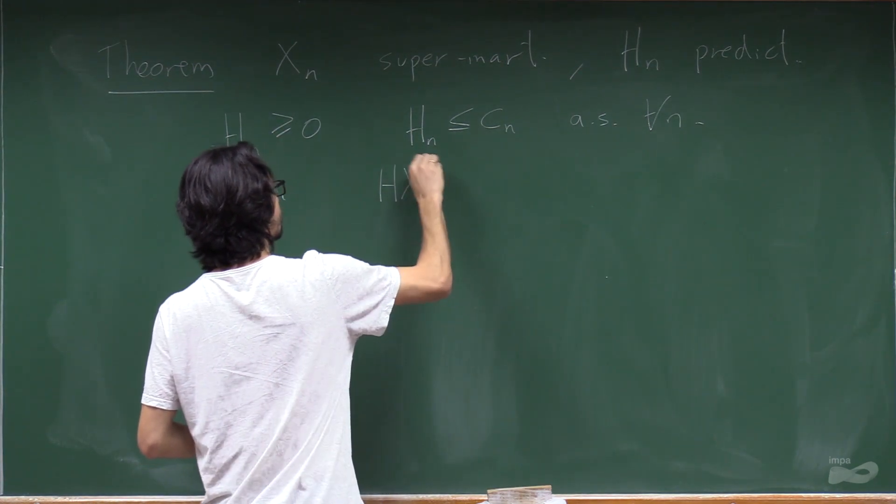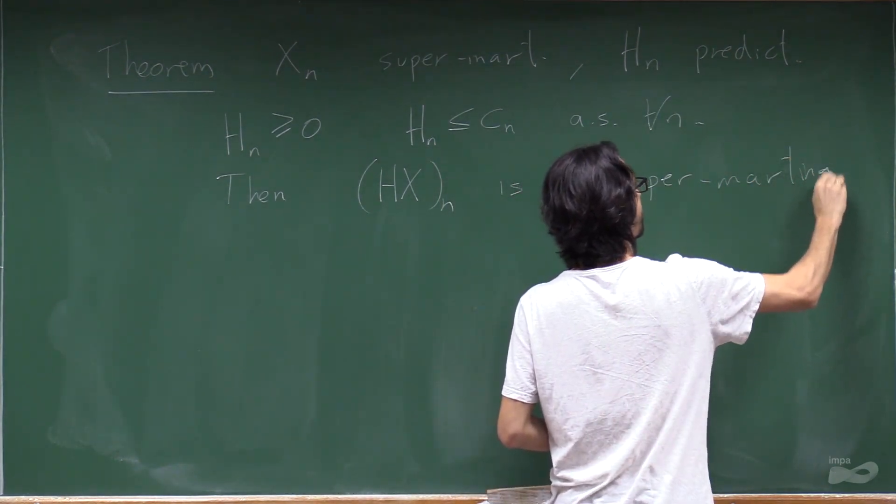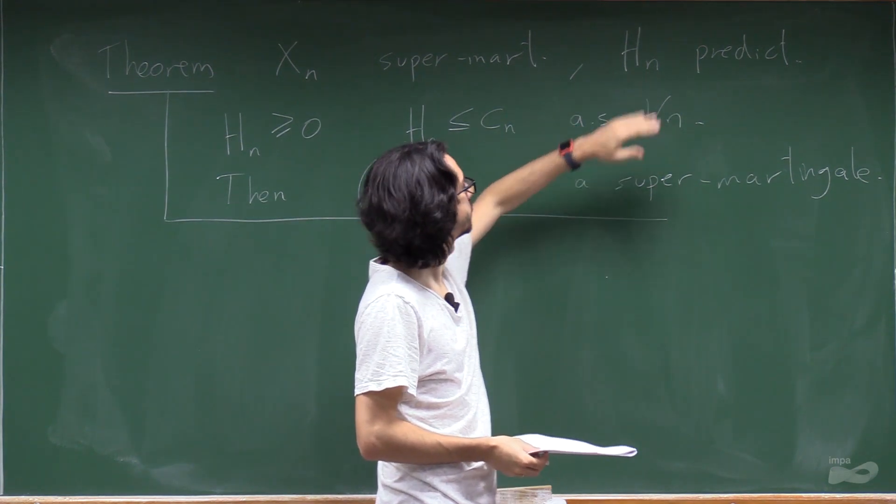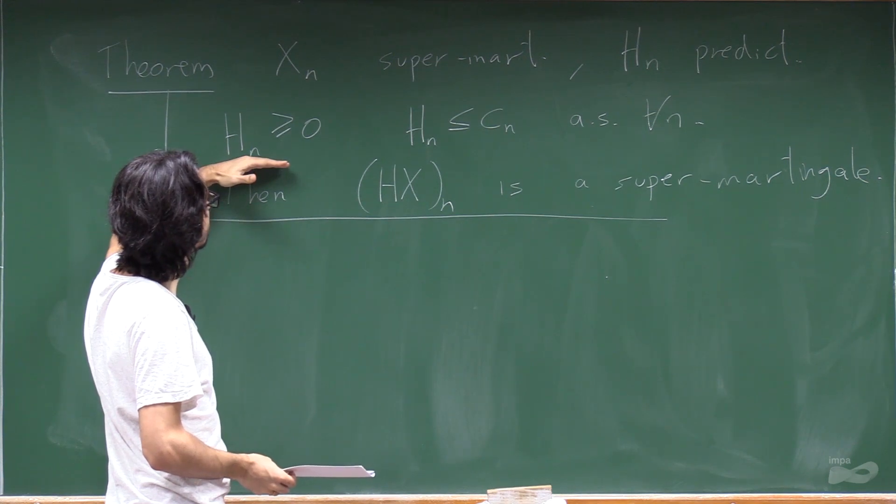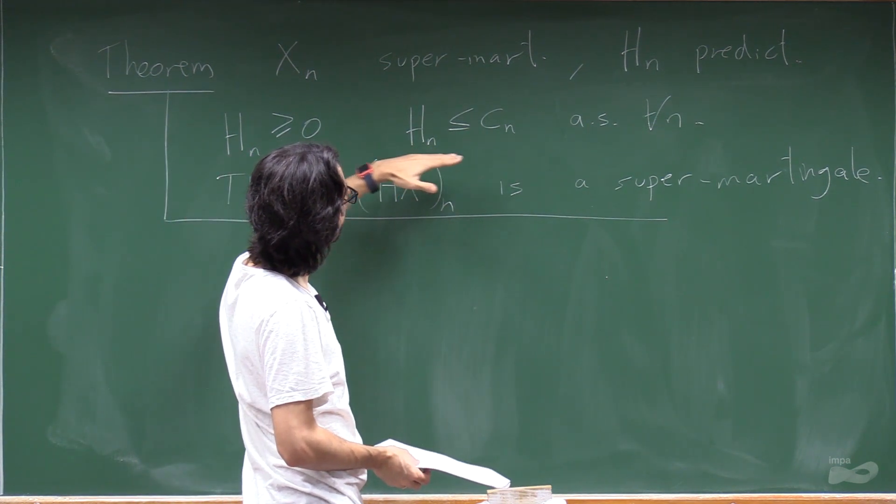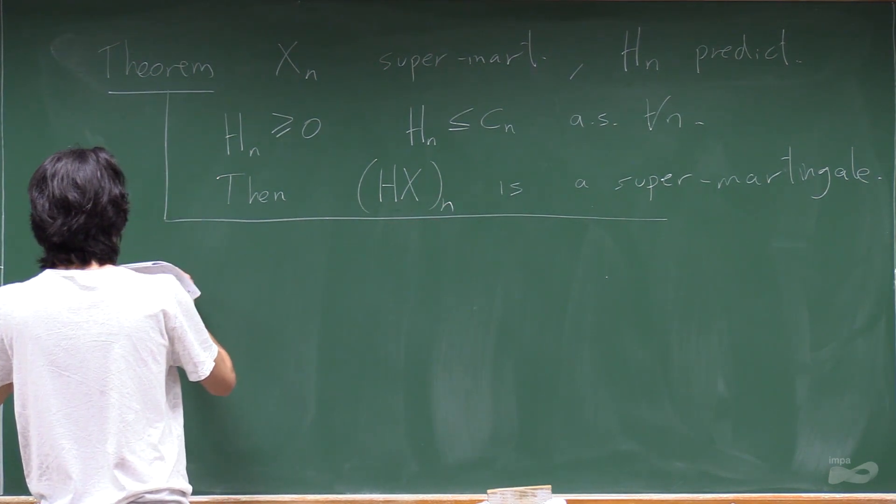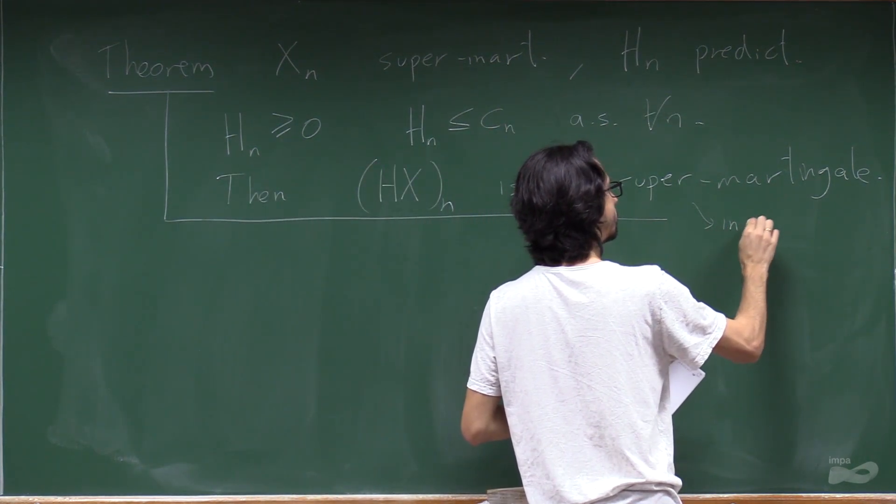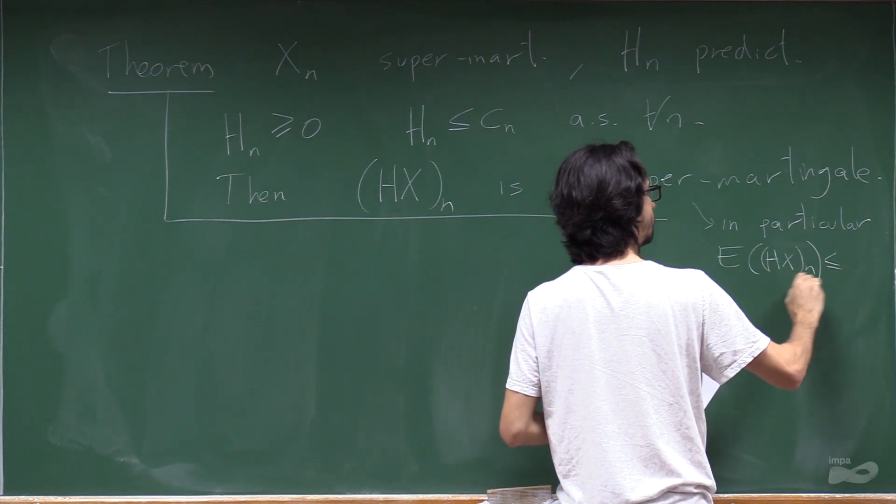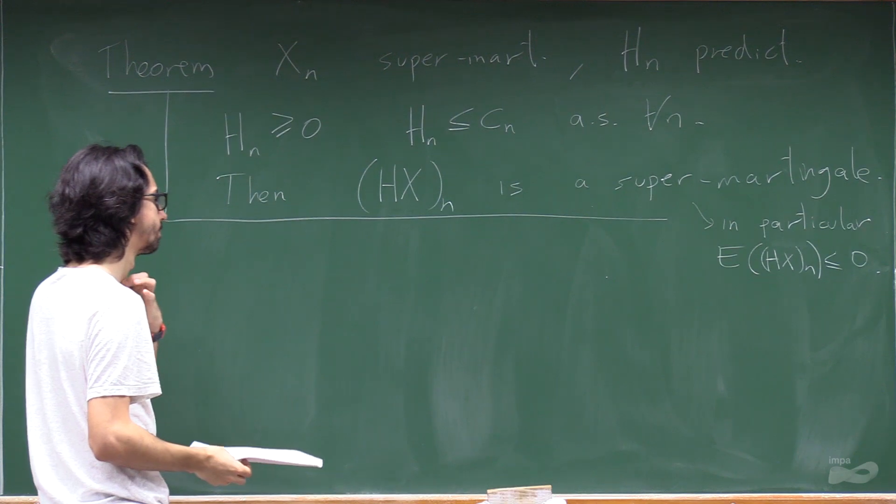Then the integral, viewed as a process, is a supermartingale. In other words, don't go to the casino. Not for profit. So you have a predictable process. You cannot bet against the casino. You have to play the positive bets all the time. And you have some integrability condition. Then the money you get with this betting strategy is also a supermartingale. In particular, the expectation of HXn is smaller or equal than the expectation of X0. Sorry, it's smaller or equal than 0. OK, proof.